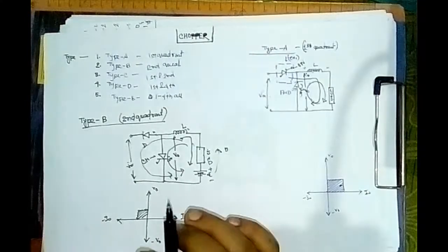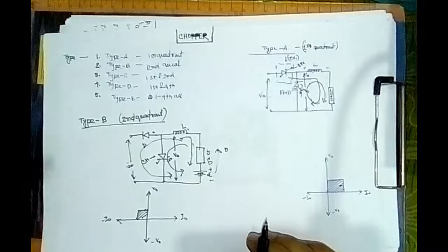That is why it is called a second quadrant chopper or Type B chopper.